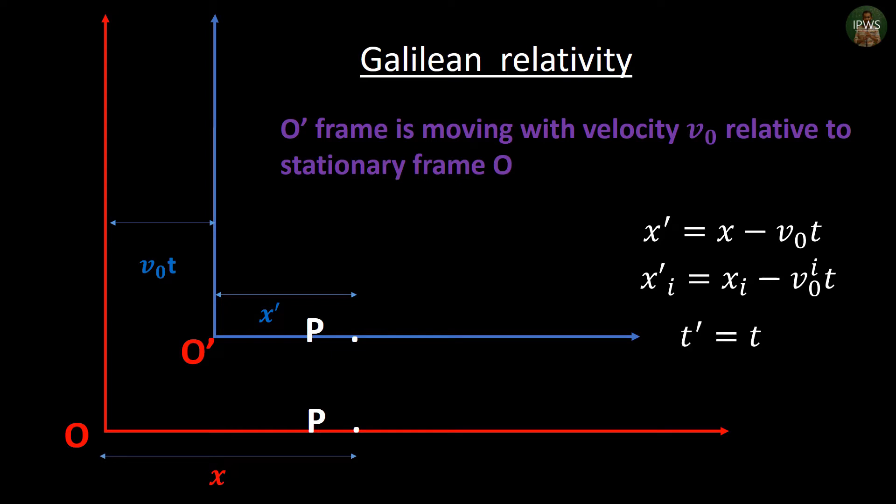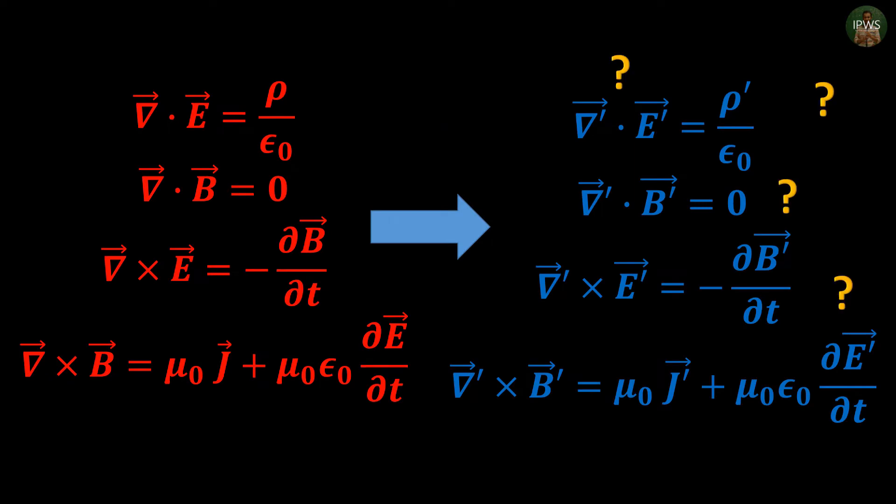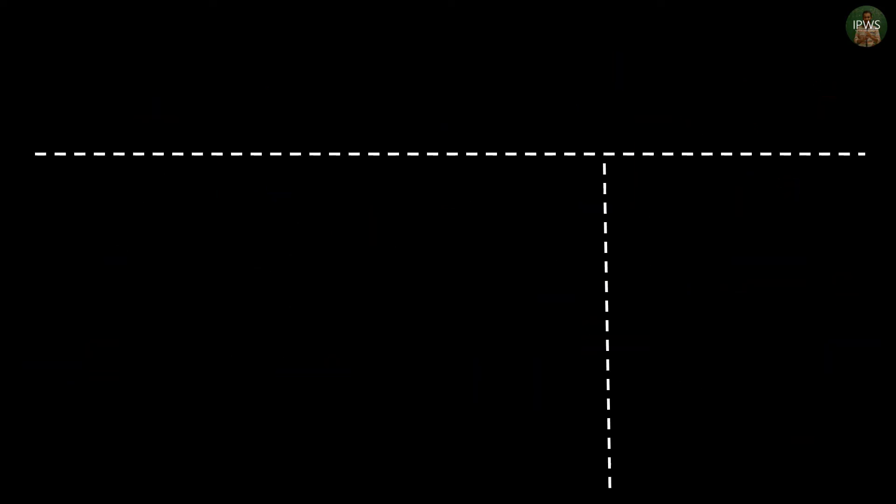So what happens to our Maxwell's equations when viewed from x' frame? Now before we attempt to see the effect on those equations, we need to deal with a few terms: our three-dimensional derivative operator del', partial time derivative ∂/∂t', charge density, current density, electric field, and changed magnetic field B'.